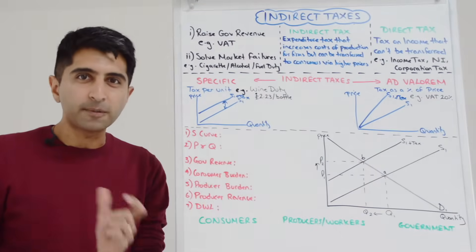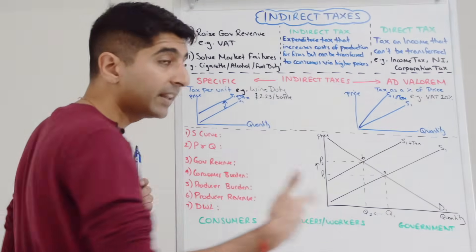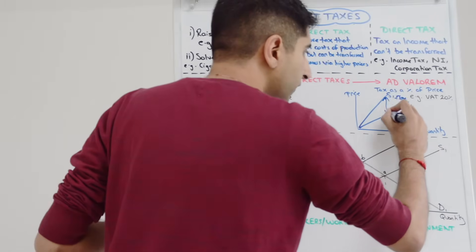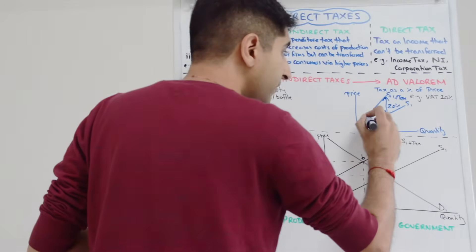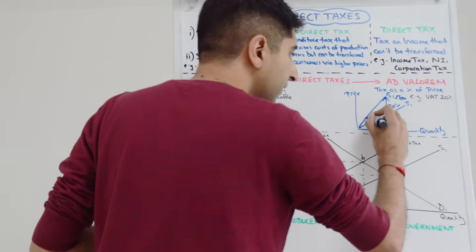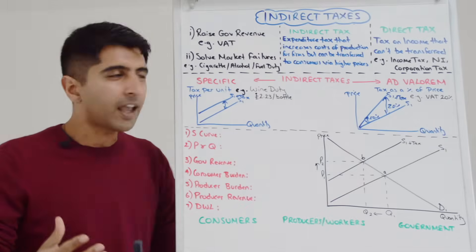Normally a percentage tax is VAT, the supply curve will shift pivoted from S1 to S1 plus tax. Now again the vertical distance between the two supply curves will represent the value of the tax, in this case 20%. So if we look at it here that's 20%. Even if we look at it down here that's also 20%. So what are we trying to say?